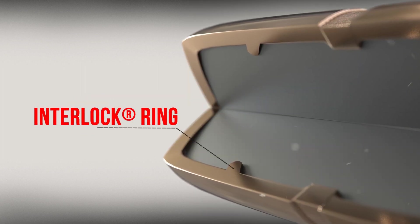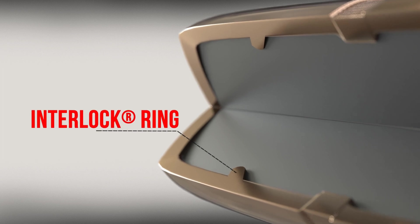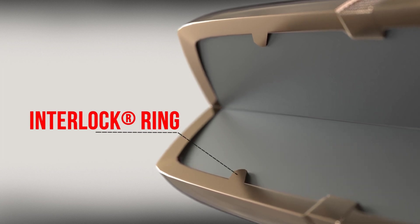All Interlock bullets feature a raised interlock ring in the jacket that is embedded in the bullet's core to help mechanically lock the jacket and core together.